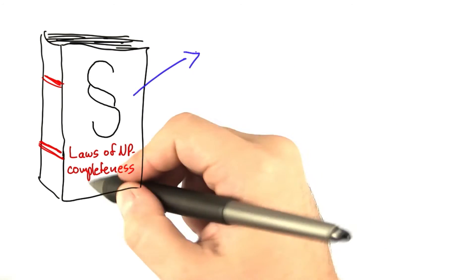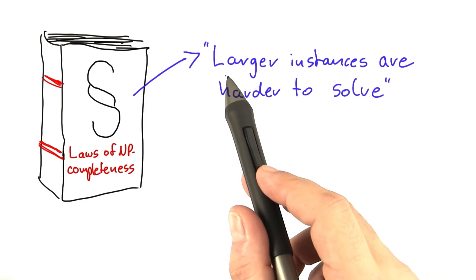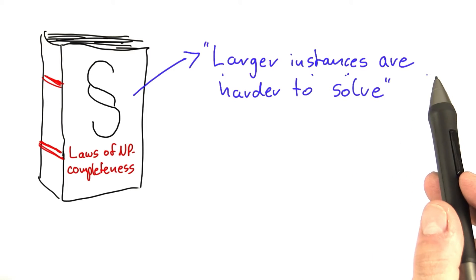So I'm going to state another law from the book of NP-completeness, and that law in which we will soon poke loopholes is larger instances are harder to solve.